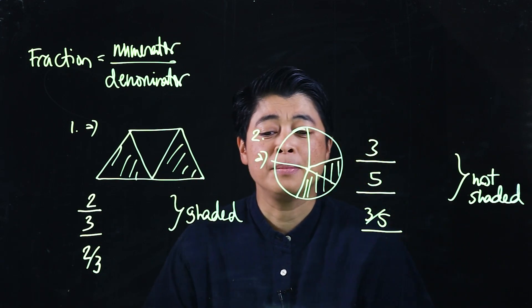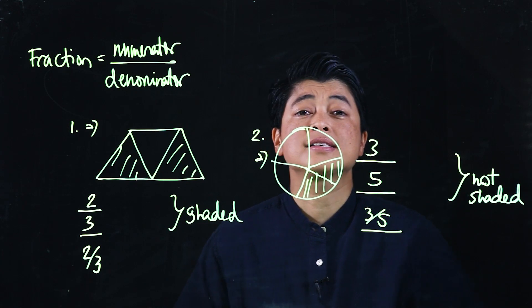Again, parents, it can be daunting, but this is an easy start. You just need to show your kids how to recognize the figure and count the number of parts — that count goes on the bottom — and what you want, either the shaded or not shaded parts, goes on the top. That concludes Lesson 1 of Chapter 14.